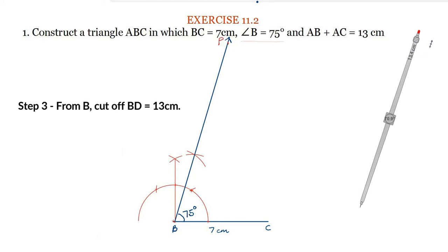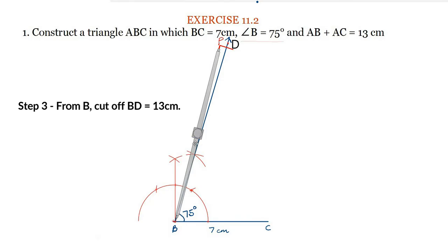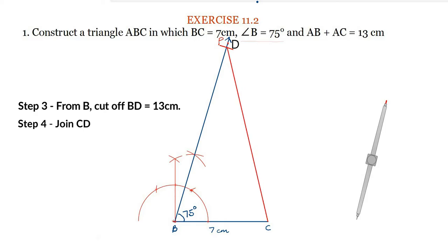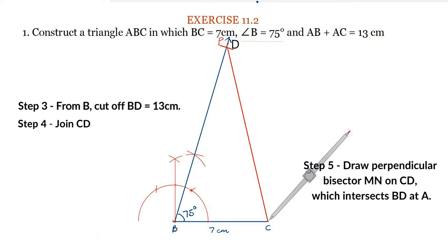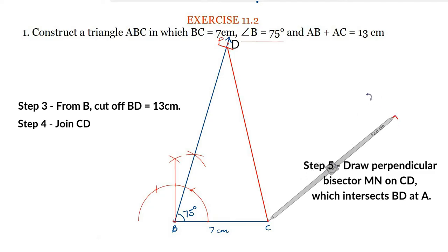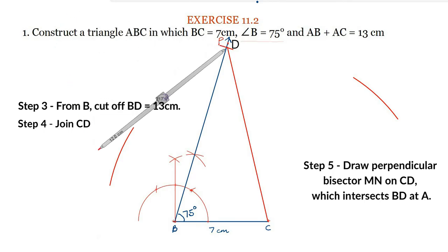Now, the third condition given to us is AB plus AC is equal to 13 cm. So we will open our compass equal to 13 cm, place the compass at B, and cut the ray BP at point D to get AB plus AC equal to 13 cm. We will now draw a perpendicular bisector of CD. We know that point A lies somewhere on BD.